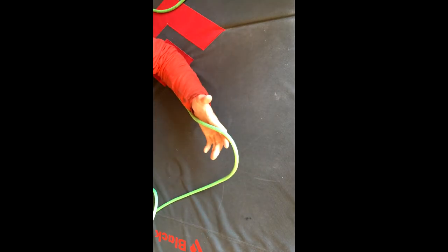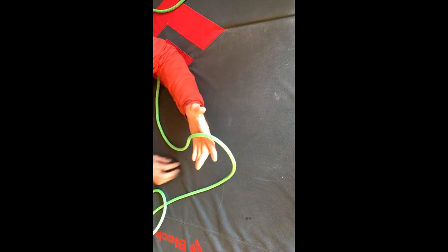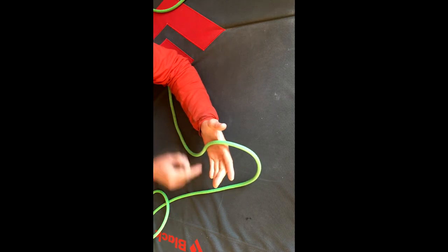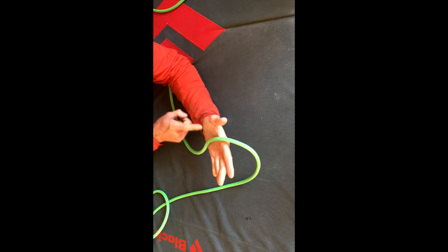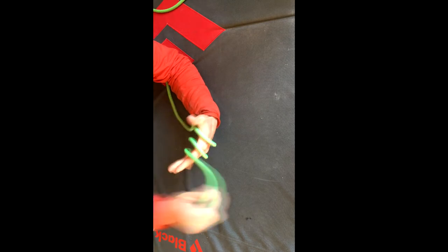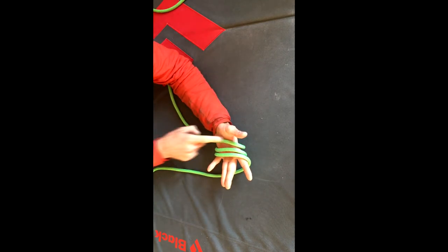The next method of tying the alpine butterfly is tying it around our palm. First thing we're going to do is wrap the rope around our palm three times, trending away from our thumb. So we have one, there's two, and there's three.